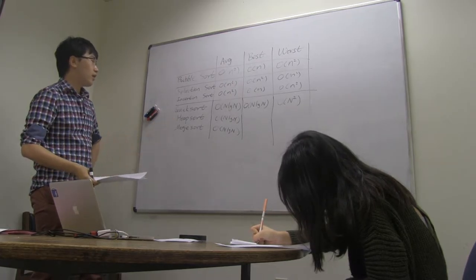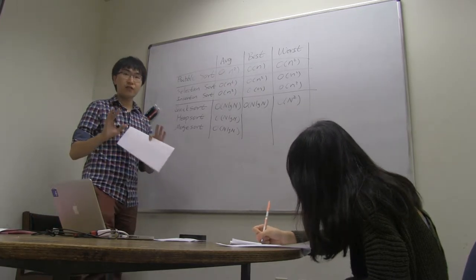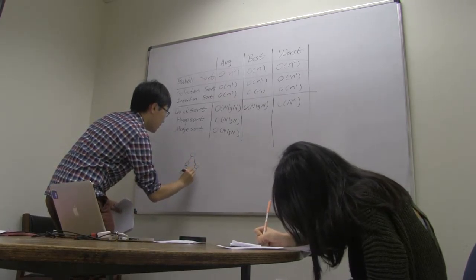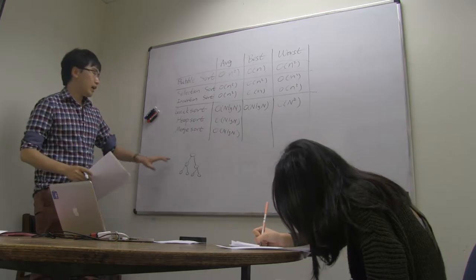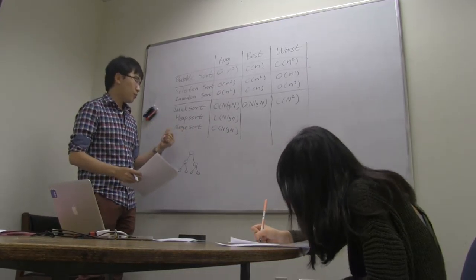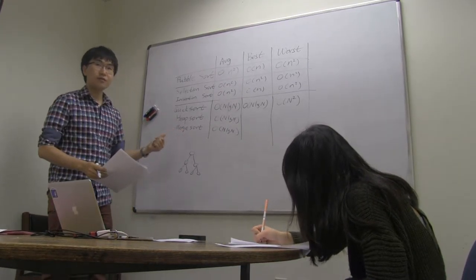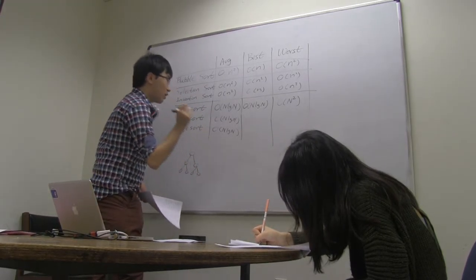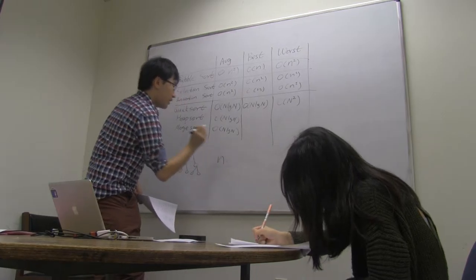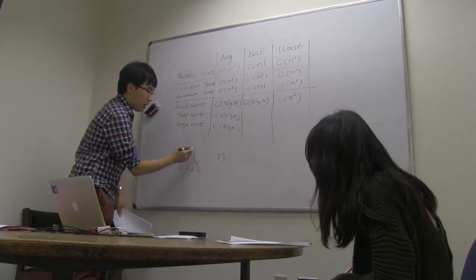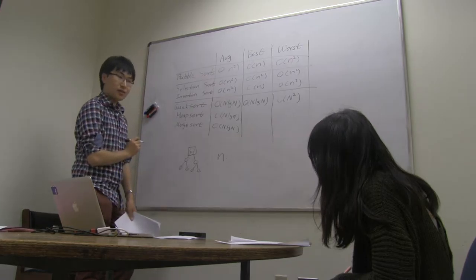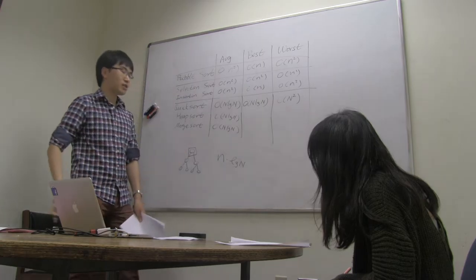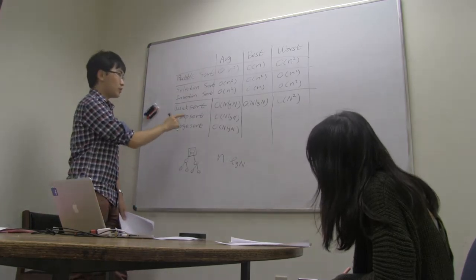And then, in heap sort, we are actually using the data structure of heap to organize the data. And then, in every pass, we can pop the smallest number from the heap and reorganize that, right? So, we need the smallest number for n times. And each time, it's pop top of the heap and then reorganize the heap. So, it will be n times log n to be the total time complexity. That's how heap sort works.